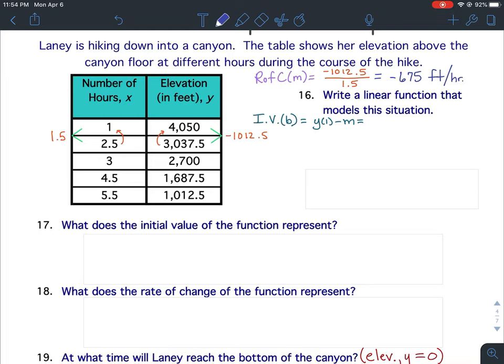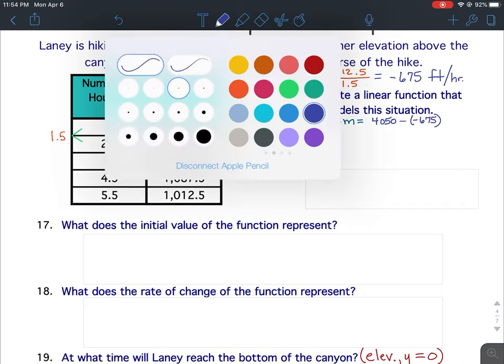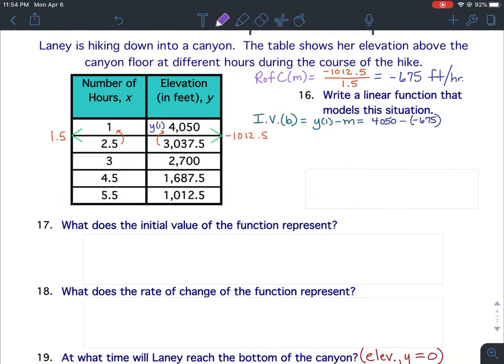The initial value. Remember, your initial value is the value of y when x is 1 minus the slope. Right here is the value of y when x is 1. See this 1 over here? There's my value of y. So the value of y when x is 1 is 4,050. And we're going to subtract our slope, but we need to be careful because it's going to be minus negative 675. If you simplify that, you get 4,725.